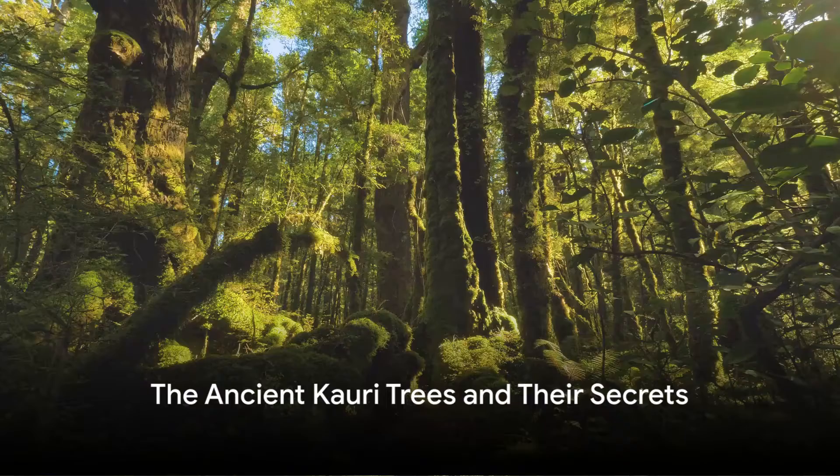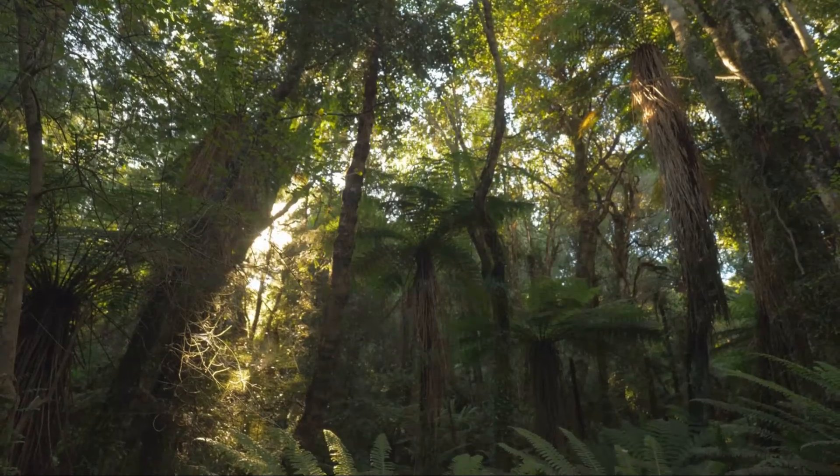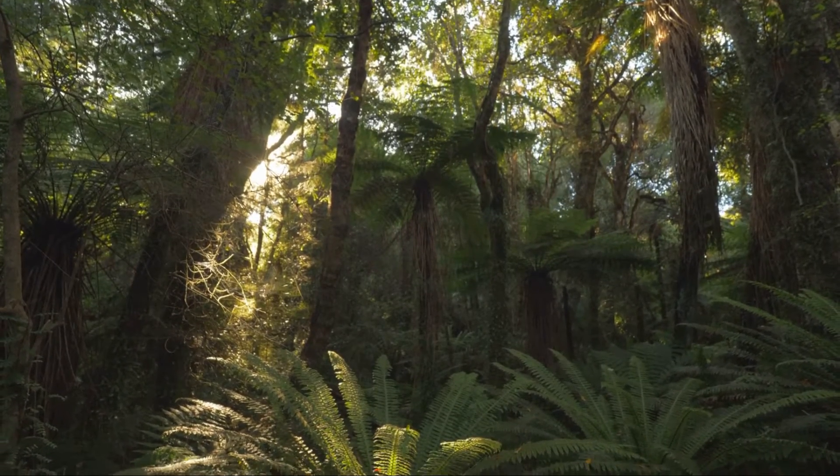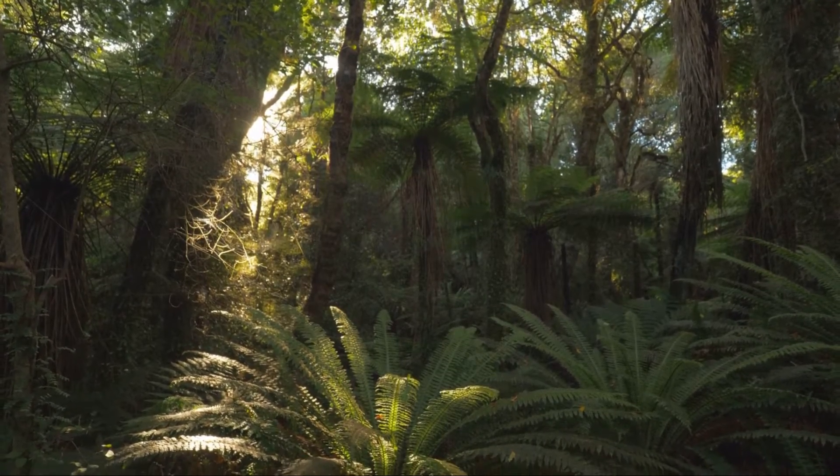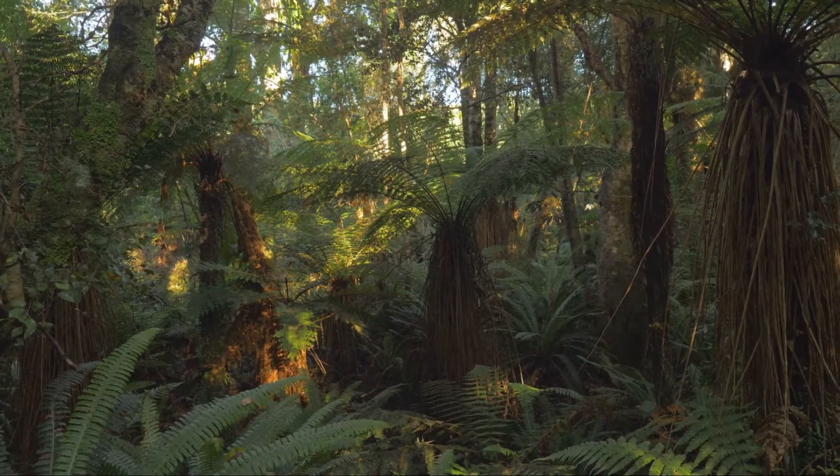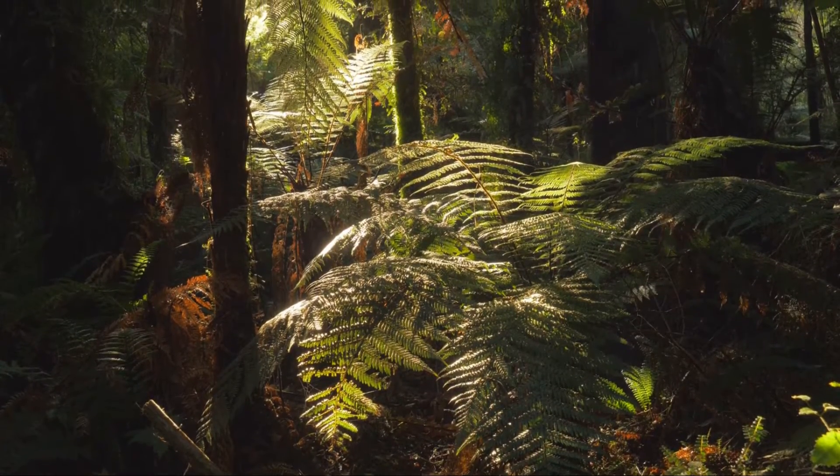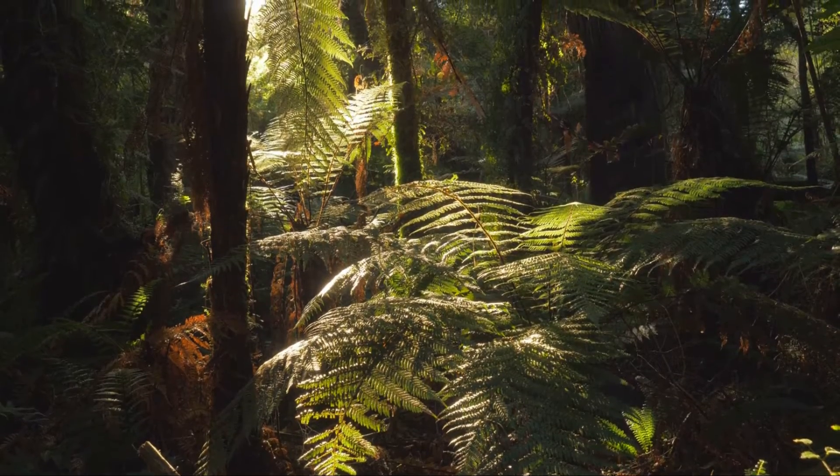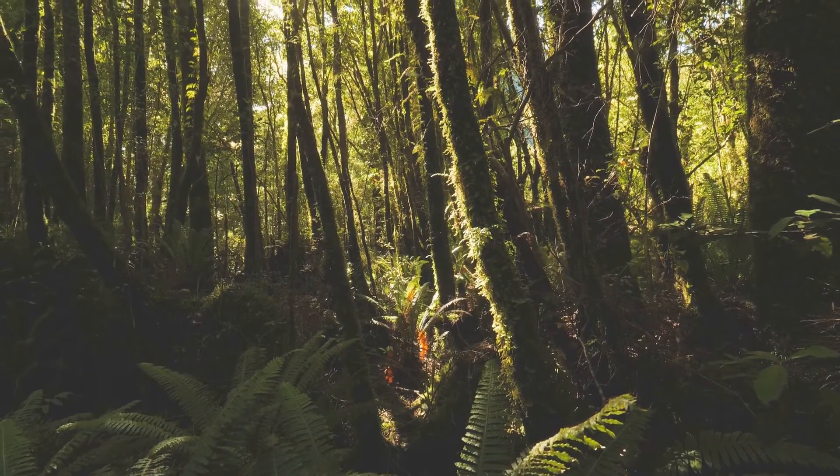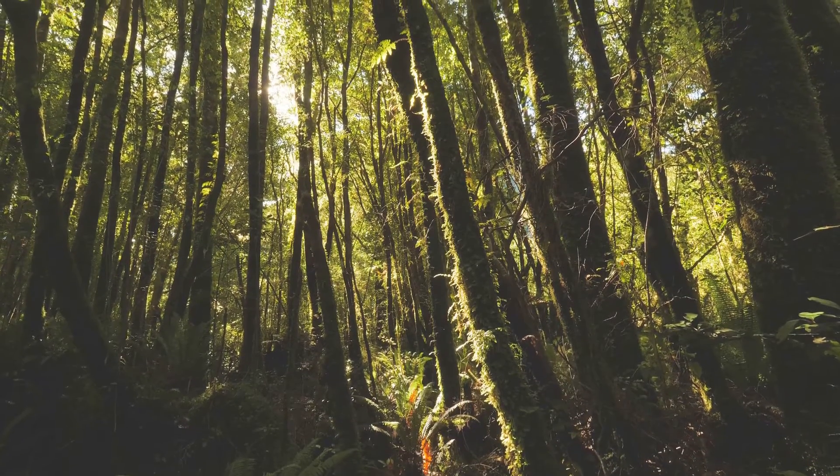In the bogs of New Zealand, ancient Kauri trees have been preserving a secret for over 40,000 years. Forged in the crucible of time, the ancient Kauri trees of New Zealand are among the oldest living things on Earth. These age-old guardians have been silently recording the Earth's magnetic field for thousands of years, their lifelines etched in the rings of their colossal trunks. Astonishingly, some of these Kauri trees were already centuries old when they fell over 40,000 years ago. Preserved perfectly in the bogs where they tumbled, these trees provide a remarkable record of Earth's past and a window into the workings of our planet's magnetic field.